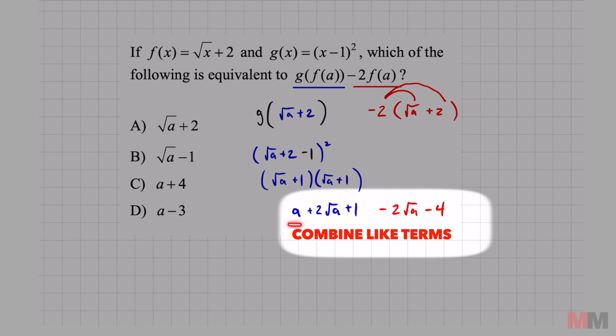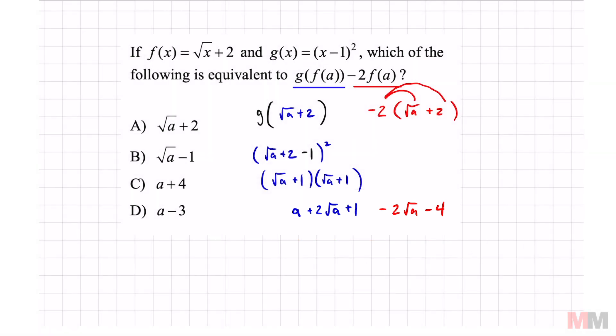Let's look at the first term a, that does not go with anything else. So that's just going to drop down. Positive 2 root a, combine it with negative 2 root a. Those are going to cancel out because plus 2 minus 2 is 0. And 1 minus 4, combine like terms, you get minus 3 which is answer choice D.